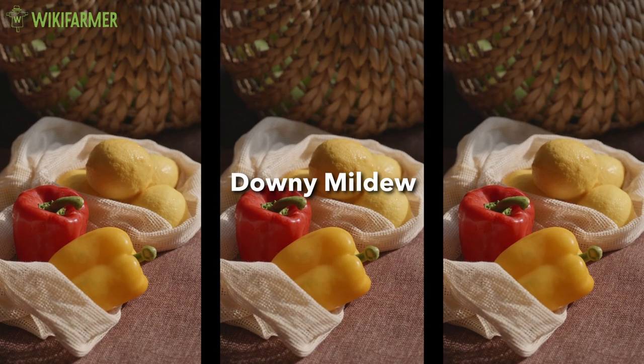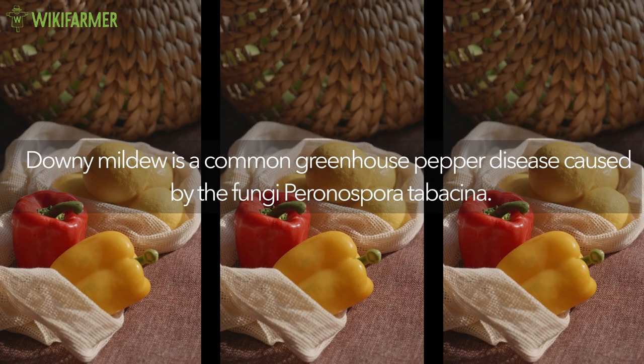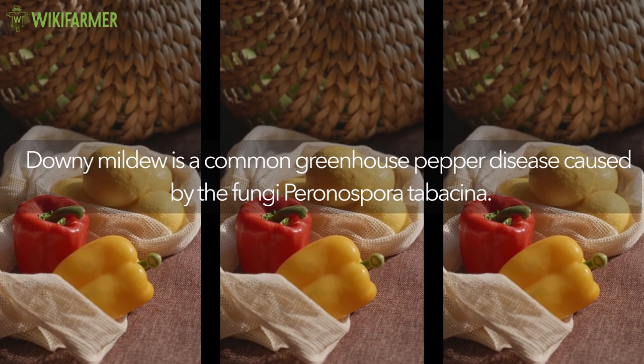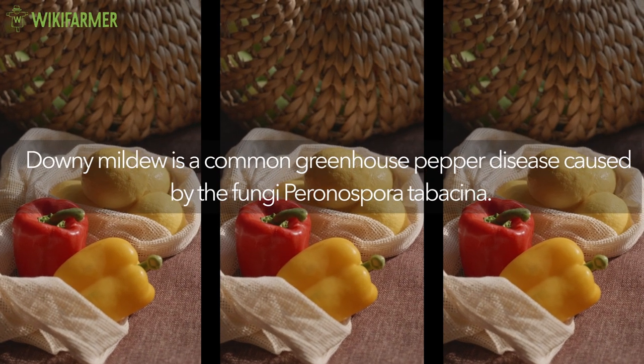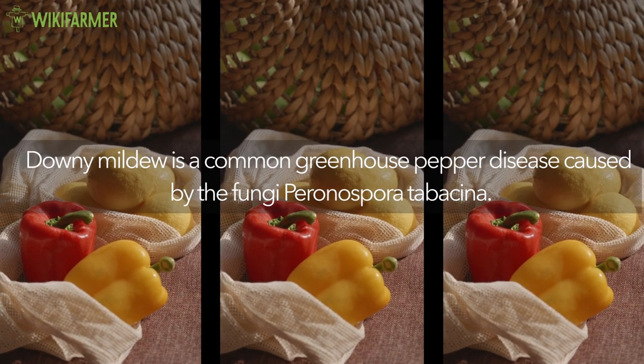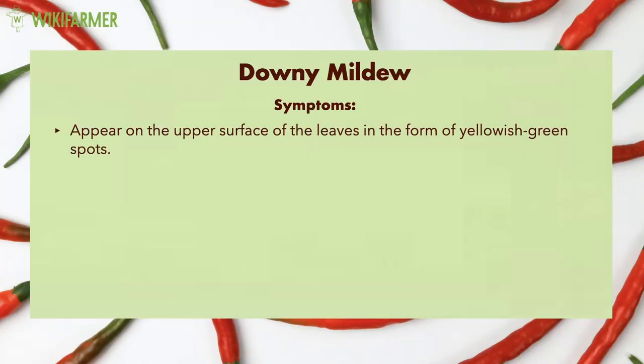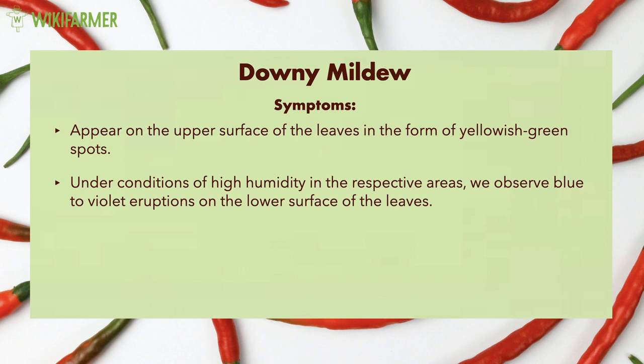Downy Mildew. Downy mildew is a common greenhouse pepper disease caused by the fungi Peronospora tabacina. Symptoms appear on the upper surface of the leaves in the form of yellowish-green spots. Under conditions of high humidity, we observe blue to violet eruptions on the lower surface of the leaves. Heavily infected leaves die and fall.